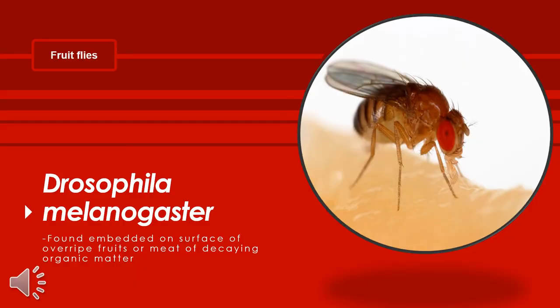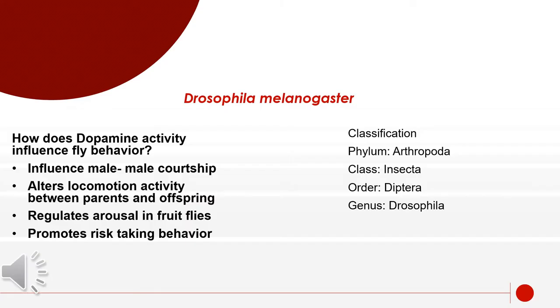Fruit flies are scientifically called Drosophila melanogaster. They are found on surfaces of overripe fruits or decaying organic matter. Drosophila melanogaster are classified within the phylum Arthropoda, class Insecta, order Diptera, and genus Drosophila. Studies have concluded that dopamine activity influences male-male courtship, alters locomotion activity between parents and offspring, regulates arousal in fruit flies, and also promotes risk-taking behavior.